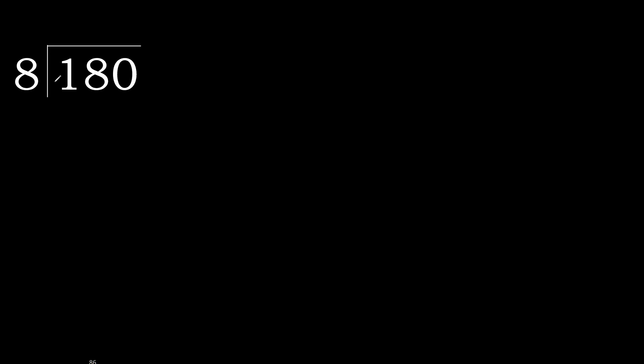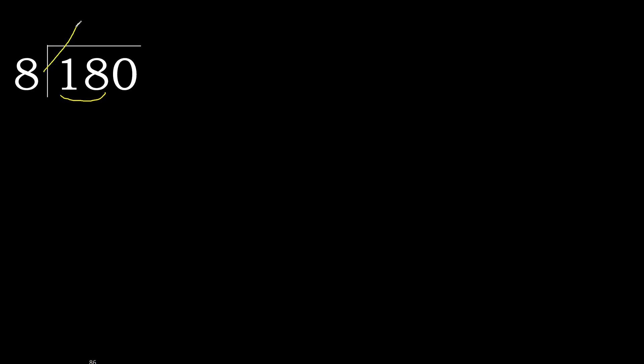180 divided by 8. 1 is less, therefore next. 18 is not less, therefore with 18. 8 multiply by which number is nearest to 18,